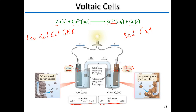So reduction occurs at the cathode and oxidation occurs at the anode. We have two pieces of metal connected with a wire, and in each beaker we have solutions — zinc nitrate on the left and copper nitrate on the right. We still need sources of zinc and copper for the reaction. Connecting the two beakers in the middle is what's called the salt bridge, which can be any salt such as potassium nitrate. The salt bridge helps balance the charge electronically by providing positive and negative ions. Without the salt bridge, nothing will occur.